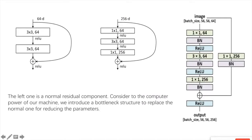Also, considering the computational power of our machine, we use a bottleneck structure to replace the normal residual net structure for reducing the parameters. The left one is a normal residual component according to the ResNet definition. The middle one is the ResNet structure with bottleneck. And what we actually use in our code is the right one, using ReLU as an activation function and also a batch normalization layer to avoid gradient vanishing further.